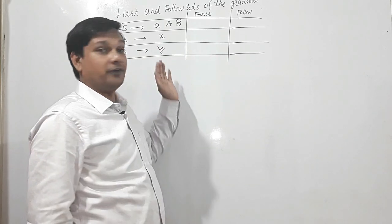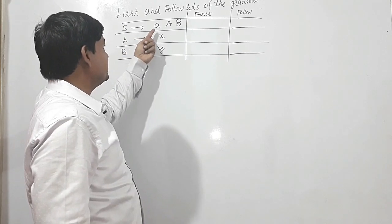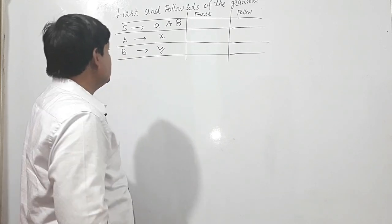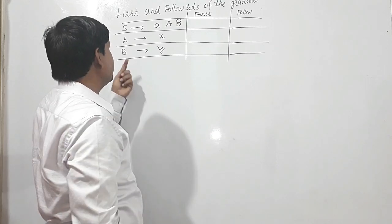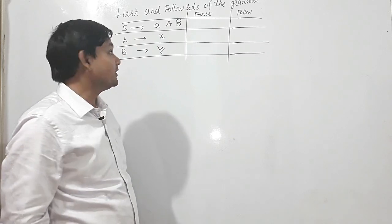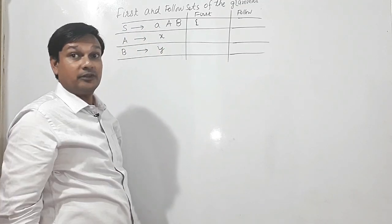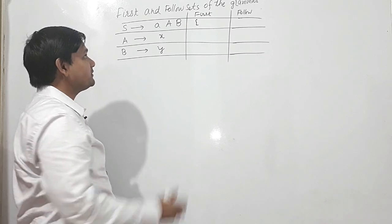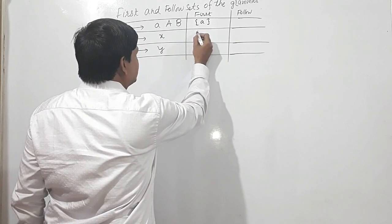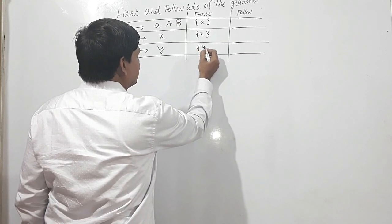Now we shall discuss First and Follow sets of any grammar. The grammar is: S produces AAB, A produces X, and B produces Y. In the First set, we look at what first terminal we get from these non-terminals. S produces 'a' (terminal) so its First is {a}. A produces X so its First terminal is X, and B produces Y so its First terminal is Y.